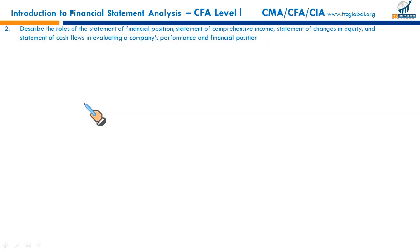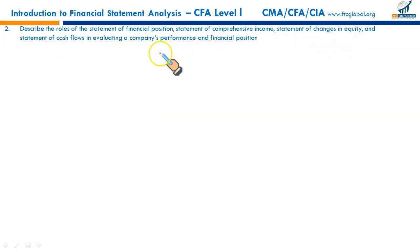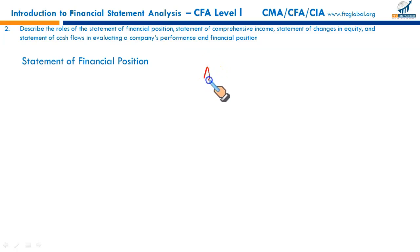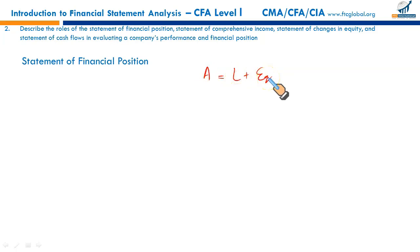Moving on to the next LOS: describe the role of the statement of financial position, statement of comprehensive income, statement of changes in equity, and statement of cash flows in evaluating a company's performance and financial position. The statement of financial position, also called the balance sheet, is a statement at a particular point in time showing the company's assets, liabilities, and equity.